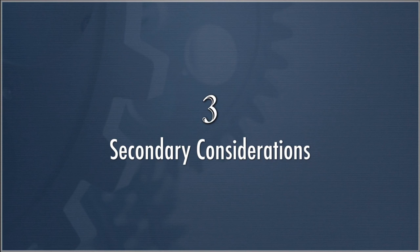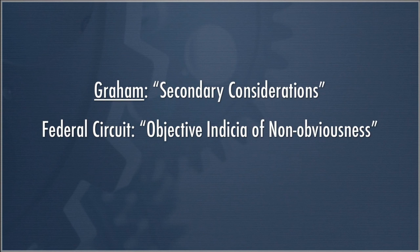So let's finish up with some discussion of secondary considerations. We've been discussing the basic elements of obviousness: determining the differences between the invention and the prior art, determining the level of skill in the relevant art, and determining the scope and content of the prior art. From there, you move on to the question of whether it's obvious. The court in Graham goes on to say that secondary considerations could be relevant. The Federal Circuit has upgraded them somewhat by calling them objective indicia of non-obviousness.